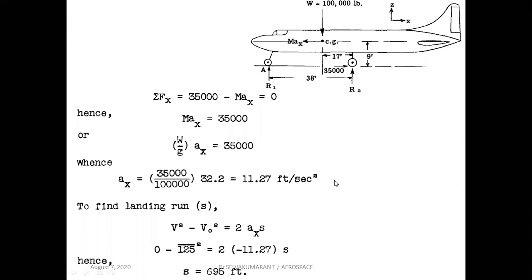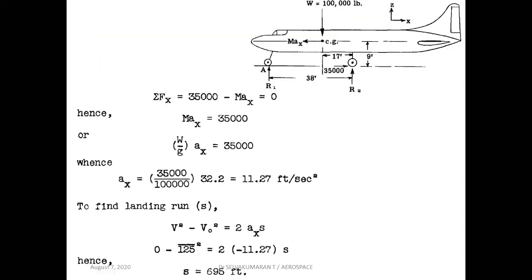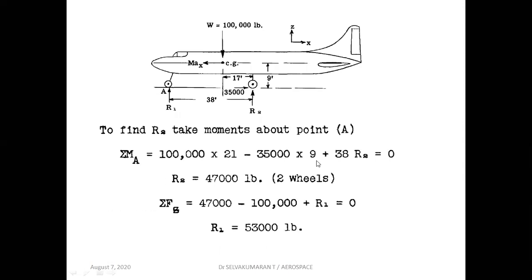To find the landing run, again use V² - U² = 2AS. Here V is 0 (final), U is 125 feet per second (horizontal velocity), and the deceleration is 11.27 feet per second squared. So S equals 695 feet for the landing run distance.